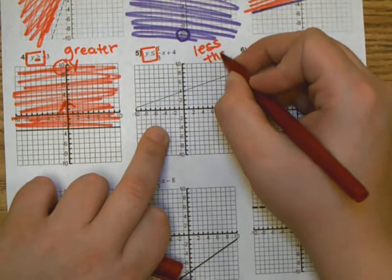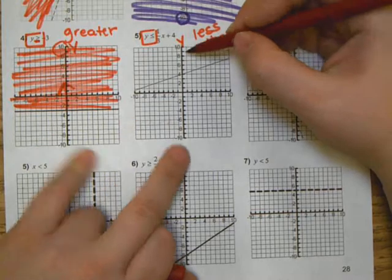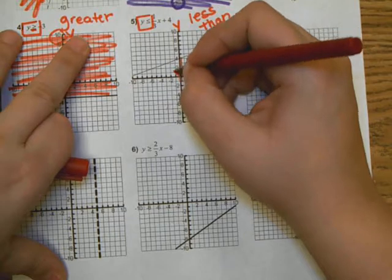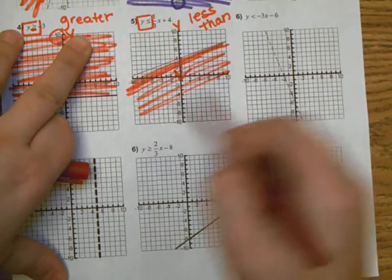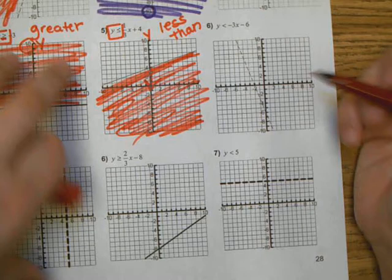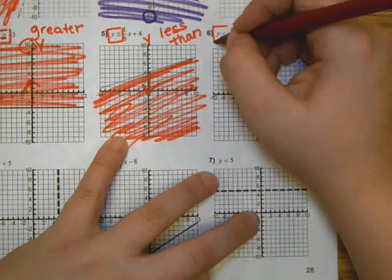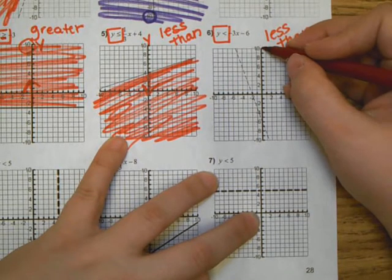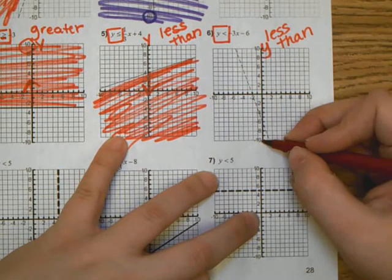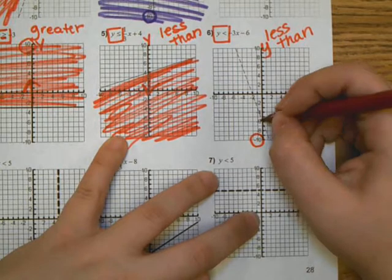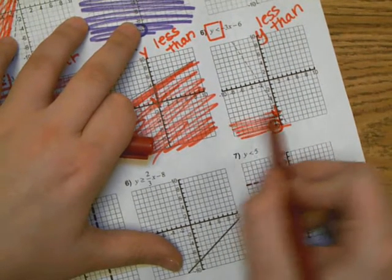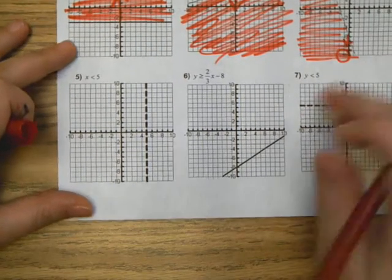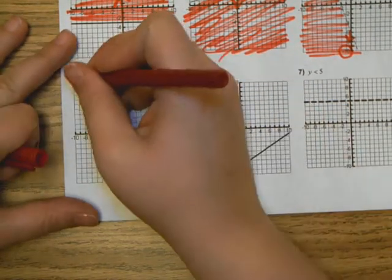Example five says y is less than or equal to. The y values are less down here, so we shade below the line. Example six says y is less than — again the y values on the y-axis are less down here, so we shade below the line.